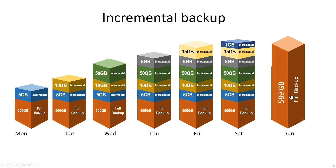A common strategy is to do one full backup every week, and then do incremental backups daily after that. This makes it easier to restore within 4–5 days. However, if you do full backups only once per month or two months, you may have a problem because the restore chain becomes very long.